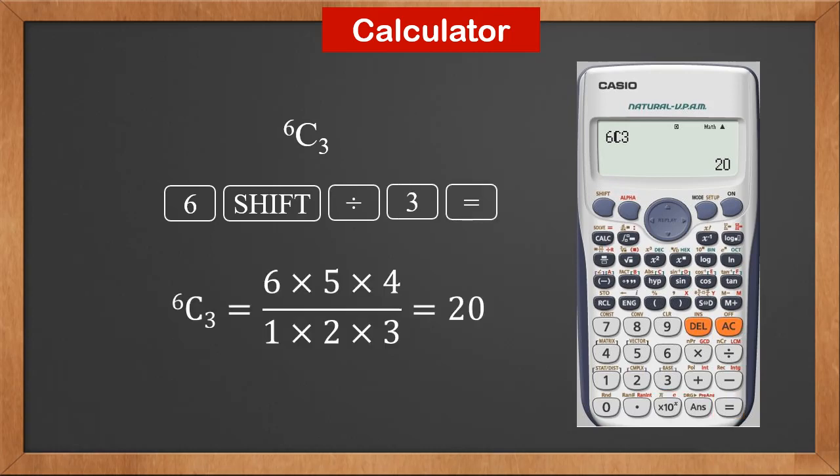The result is 20. We know 6C3 is 6 times 5 times 4 divided by 1 times 2 times 3. It is also 20. So the result is good.